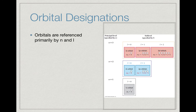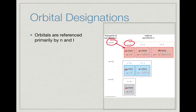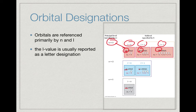Let's take a look at how we refer to our orbitals. We reference them mainly by n and l values. On our chart we have 1s, 2s, 2p, 3s, 3p, and 3d. For n equals 3 and l equals 0, that's a 3s; for n equals 3 and l equals 1, that's a 3p; for n equals 3 and l equals 2, those are 3d. The l value is reported as that letter designation.